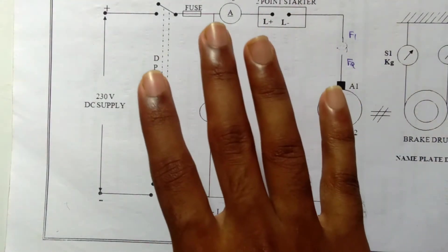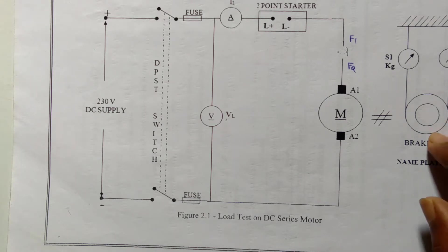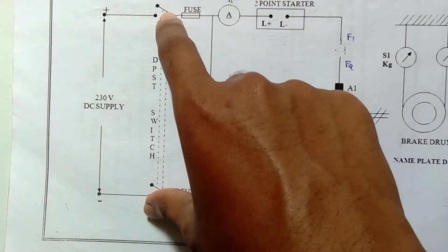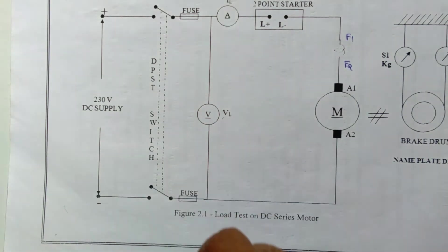The procedure for this experiment is: The circuit connections are made as per the circuit diagram shown in the figure. After some load is added to the brake drum, the DPSC switch is closed. The motor is started using the two-point starter.